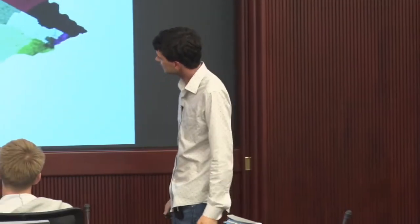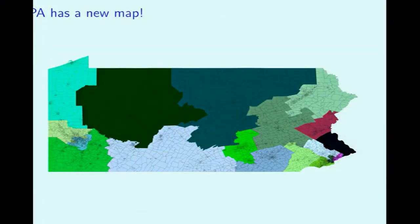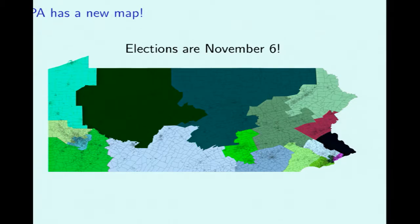Just to tie back to the beginning: Pennsylvania has a new map, and that new map only matters if we use it. Midterm elections are November 6th, and the absentee ballot deadline is sometime in October. All of this matters because this is a democracy where we vote. I think we should all make the map matter. That's it — I'll take questions.